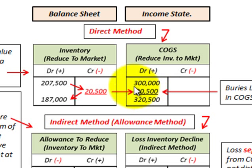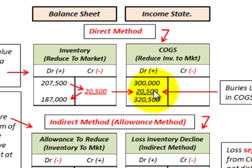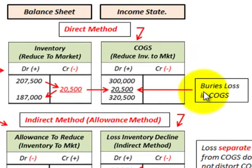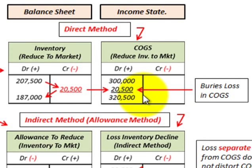The $20,500 write-down is debited to cost of goods sold on our income statement. If our cost of goods sold was $300,000 before the adjustment, adding the $20,500 write-down brings our cost of goods sold to $320,500. You can see that the loss of $20,500 on our inventory is buried in our cost of goods sold.